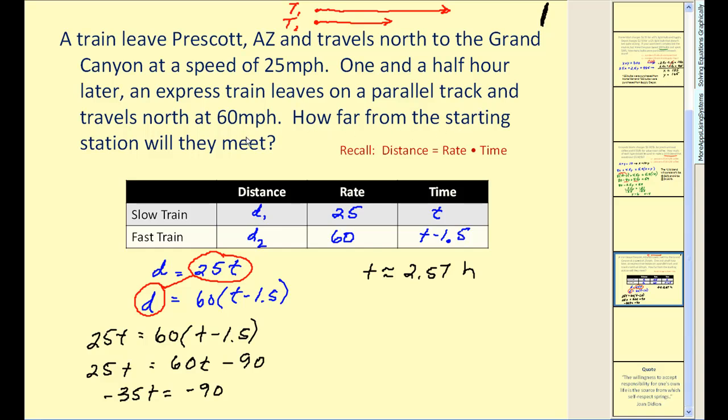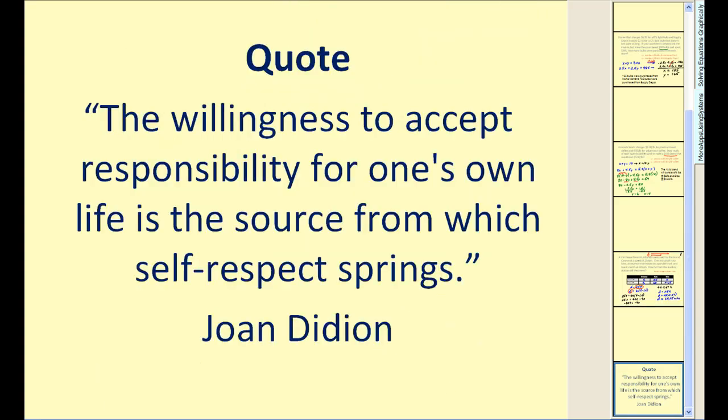Now the question asks, how far from the starting station will they meet? So this is not the answer we're looking for. So to find the distance, we have to pick one of these equations and replace t with 2.57. Let's go ahead and use the first equation. Multiplying here, we're going to get approximately 64.25 miles. So after 64.25 miles, these trains will be in the same position at the same time. I hope you found this video helpful.